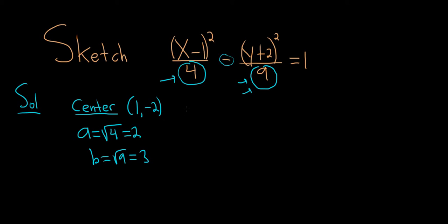The next thing to note is that because the x comes first, it opens left and right. If the y comes first, so like if it had y squared here and a minus and an x over here, then it would open up and down. It's pretty easy to memorize: x comes first, opens left and right; y comes first, opens up and down.